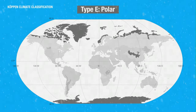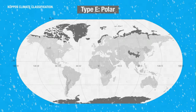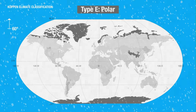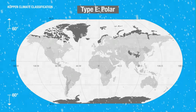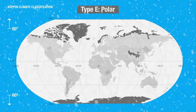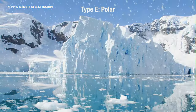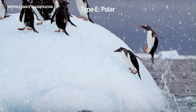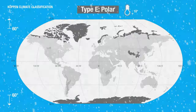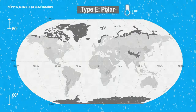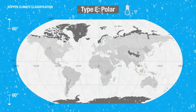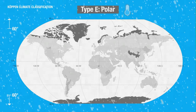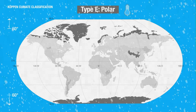Type E climates are polar. These climates are found mostly at latitudes higher than 60 degrees north and 60 degrees south. The largest parts of the polar climate locations are the North Pole and Antarctica. The polar climates are characterized by being cold throughout the year. Average temperatures in these areas never exceed 10 degrees Celsius, even in the hottest months.